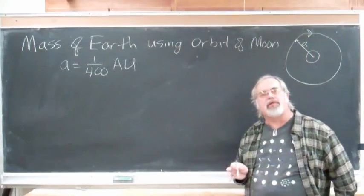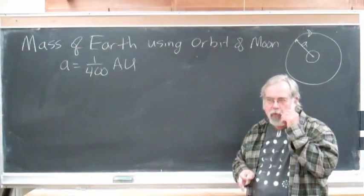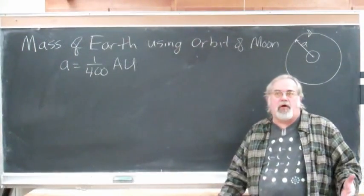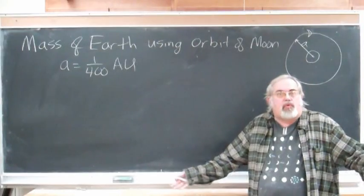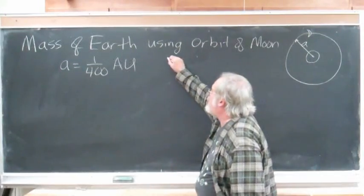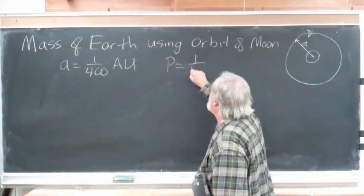The other thing we need is the period of the orbit. Well, the Moon goes around once a month, so I guess 1/12th of a year. So, the period is 1/12th year.